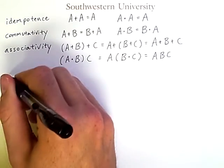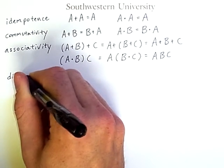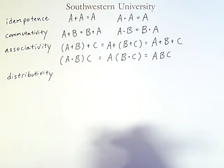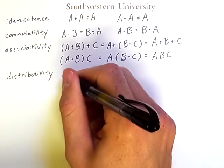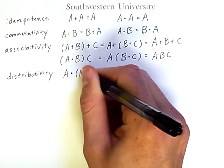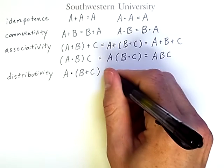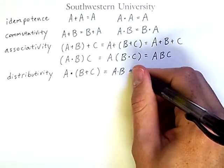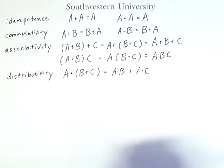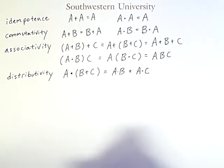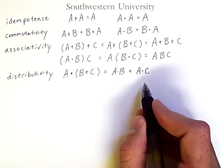Another important law, which you've no doubt seen before, is that of distributivity. You may also know this as foiling. Here is an example. A and B or C is equal to A and B or A and C. We say that AND distributes over OR, and because AND looks like multiplication and OR looks like addition because of the symbols we've chosen to use, this no doubt looks similar to foiling.